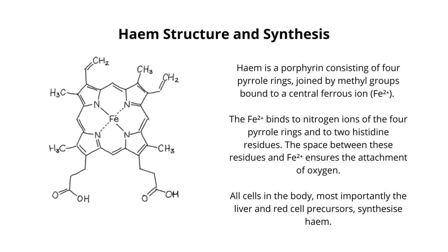Heme is a porphyrin consisting of four pyrol rings joined by methyl groups bound to a central ferrous ion. The ferrous ion binds to nitrogen ions of the four pyrol rings and to two histidine residues. The space between these residues and the ferrous ion ensures the attachment of oxygen.